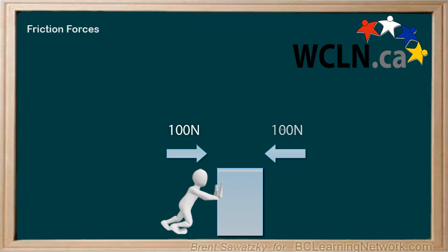If the friction force is less than 100 newtons, then the box would start to move to the right as we'd have a net force to the right. If the friction force was more than 100, then the box would start moving to the left. Since the box is sitting completely still, the friction force must be exactly 100 newtons to the left.